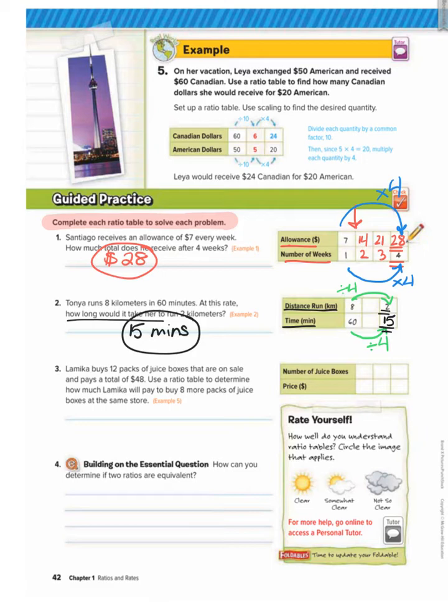Number 3: Lameka buys 12 packs of juice boxes that are on sale and pays a total of $48. Use a ratio table to determine how much Lameka will pay to buy 8 more packs of juice boxes at the same store. So she buys 12 packs for $48. So 12 packs of juice boxes for $48. We want to know how much more will she pay to buy 8 packs. So we want to go from a ratio of 12 to a ratio of 8. Notice that there's nothing we could divide 12 by to get to 8. So this is when we first need to simplify and then multiply.